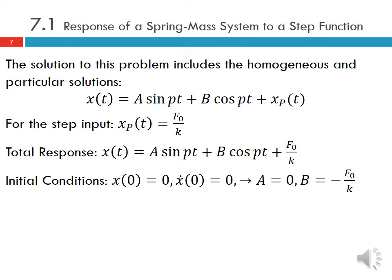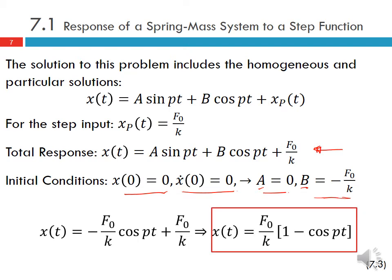We have initial conditions — if the system was initially at rest, x(0) equals zero and x-dot(0) equals zero. This means A equals zero and B equals negative F₀/k. Remember, we use the total solution to solve for A and B based on the initial conditions. So x(t) equals F₀/k times (1 minus cosine(pt)).